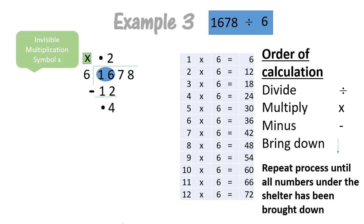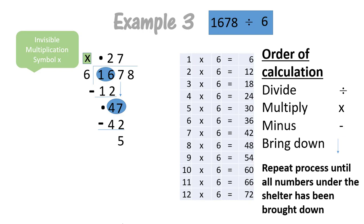Now we have to look again. Can six go into four? No, it can't because four is smaller than six. Then underneath our shelter the next number is number seven, so we're going to bring it down. Can six now go into 47? Yes, it can because 47 is bigger than six. And how many times does six go into 47? Seven times. And then we multiply: seven times six equals 42. Our next step is to subtract: seven minus two equals five, and four minus four equals zero.